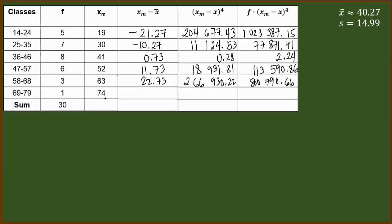And finally, we have here 74 minus 40.27. That will give us 33.73. Get the fourth power of that, we have 1,294,390.64. And just multiply it to 1. It will give us the same number. And then finally, add all the entries for this last column. We will have 3,310,033.26.